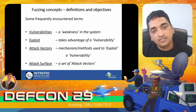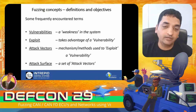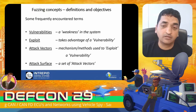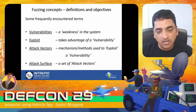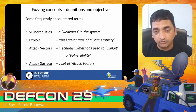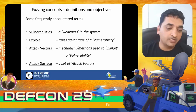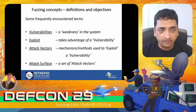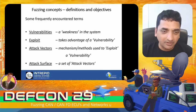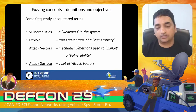Attack surface is a set of attack vectors — essentially a group of attack vectors that are loosely related, used to achieve an unexpected behavior in a DUT, an ECU, or on a network.